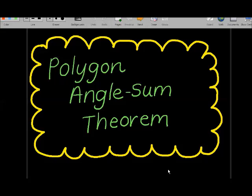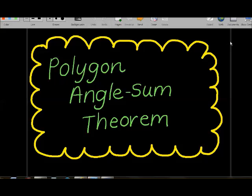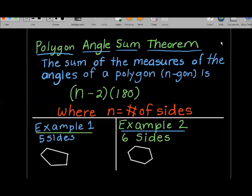This video is to review the Polygon Angle Sum Theorem. The theorem says the sum of the measures of the interior angles of a polygon is (n-2)(180), where n equals the number of sides. Let's try a couple of examples.